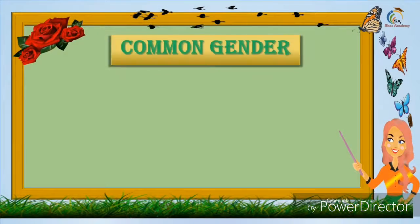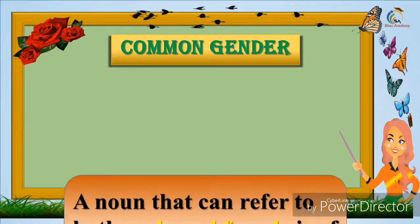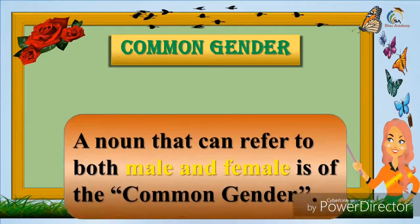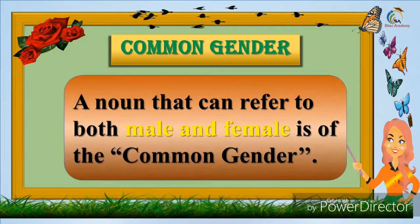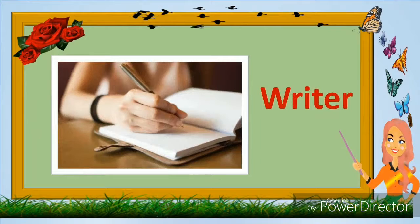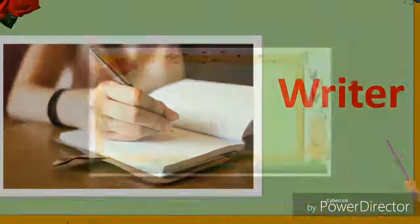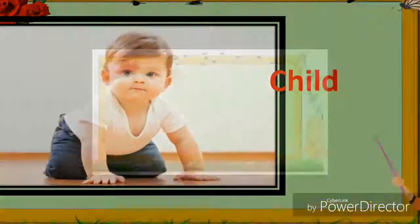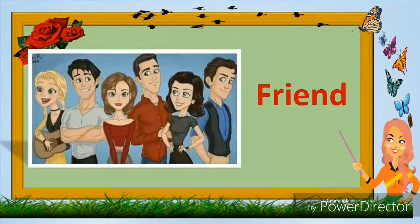Common gender. A noun that can refer to both male and female is of the common gender. For example: writer, child, friend.